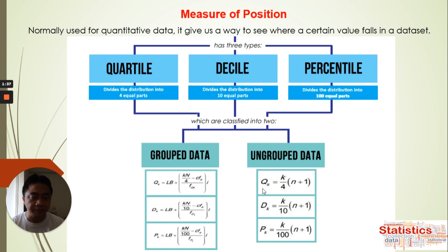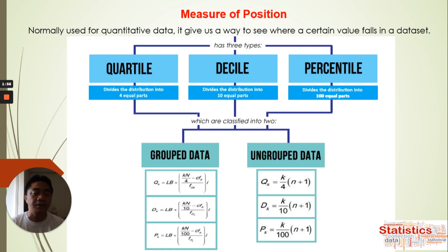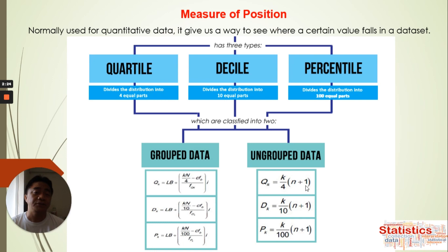For quartile — sometimes written as Q or R in other books — this represents the position or value of the quartiles. Remember that for quartiles we divide into four parts, so we have Q1, Q2, and Q3. For decile, we divide into ten parts, giving us D1 up to D9. For percentile, we go from P1 to P99. These formulas give us only the position of every measure of position.